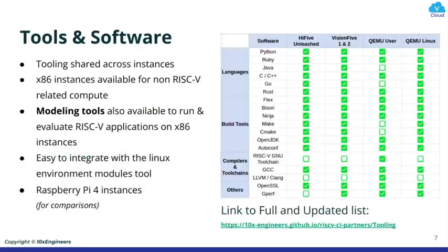On the right-hand side, you will be able to see a tentative list of packages that are available on Cloud5. We also have modeling tools for running and evaluating RISC-V applications on x86 instances. The tooling is managed with environment modules for organized package versions.